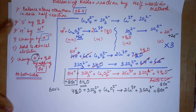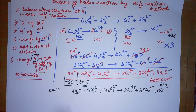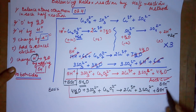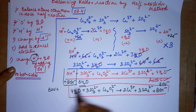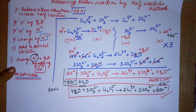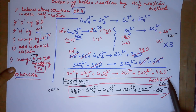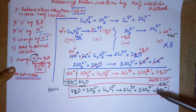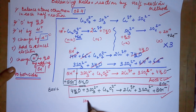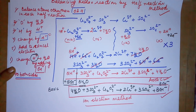So for basic medium, the answer includes 8 OH⁻ instead of H⁺, converted to water by adding OH⁻ ions — the same number of OH⁻ ions also added to the product side since it's a balanced equation. This is how we proceed for balancing by the half reaction method, also known as the ion-electron method. All the best!